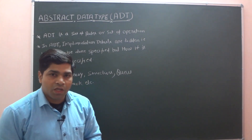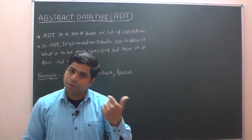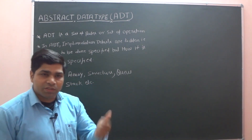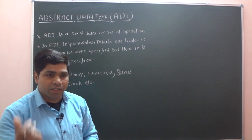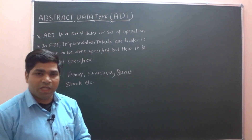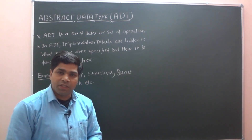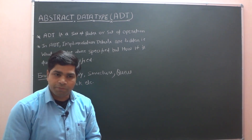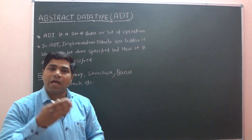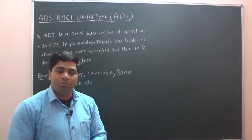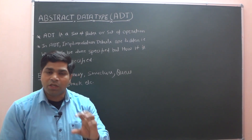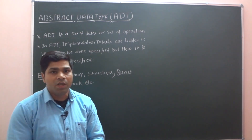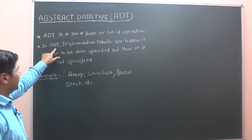Next is structure. In a structure also, you can perform all these operations: insert, delete, and all other operations. So structure is also an abstract data type. If we talk about stack — in stack also you perform operations: push and pop, insert, delete, and all operations. So stack is also your abstract data type. Meaning, all user-defined data types or non-primitive data structures are all abstract data types.